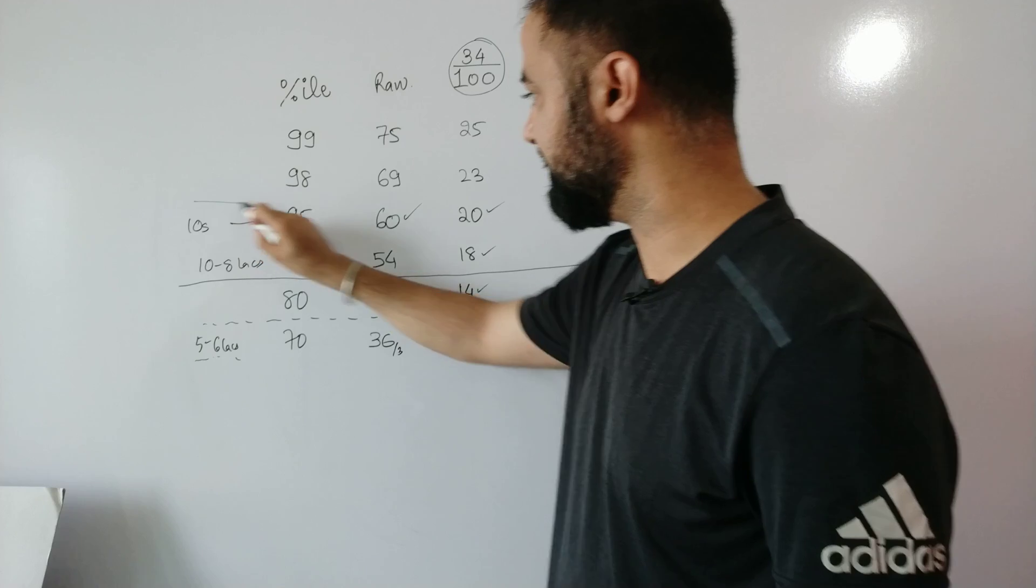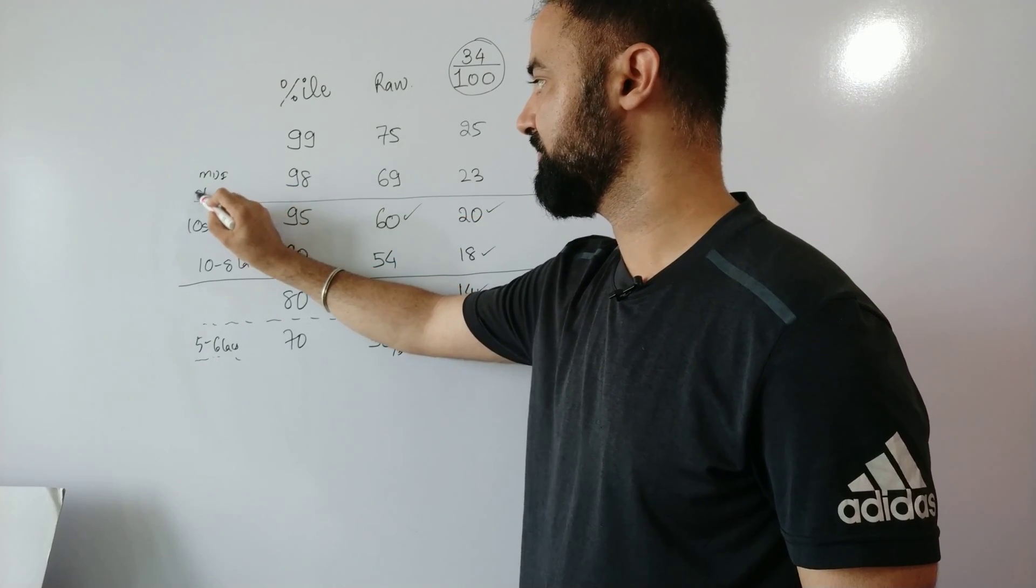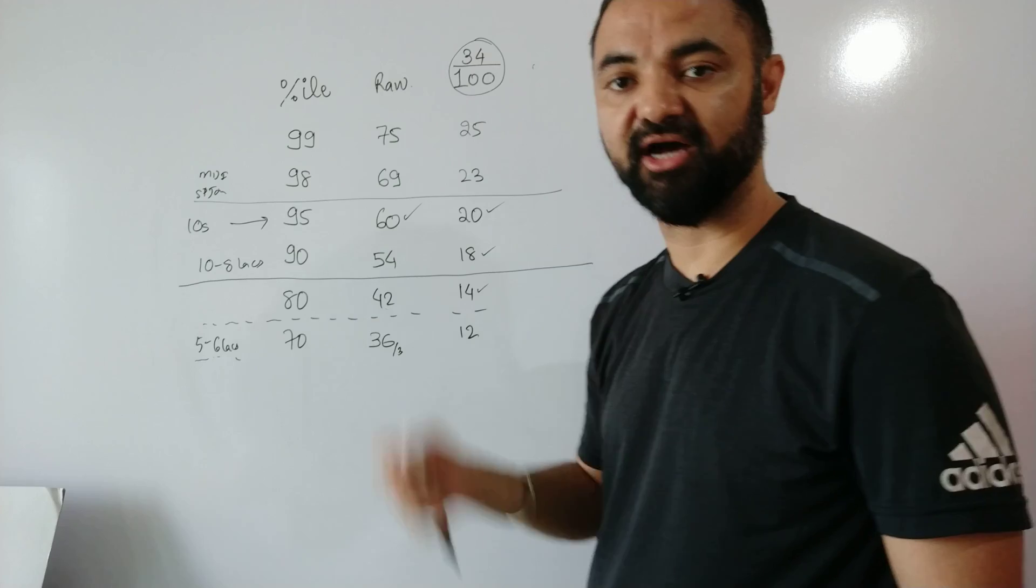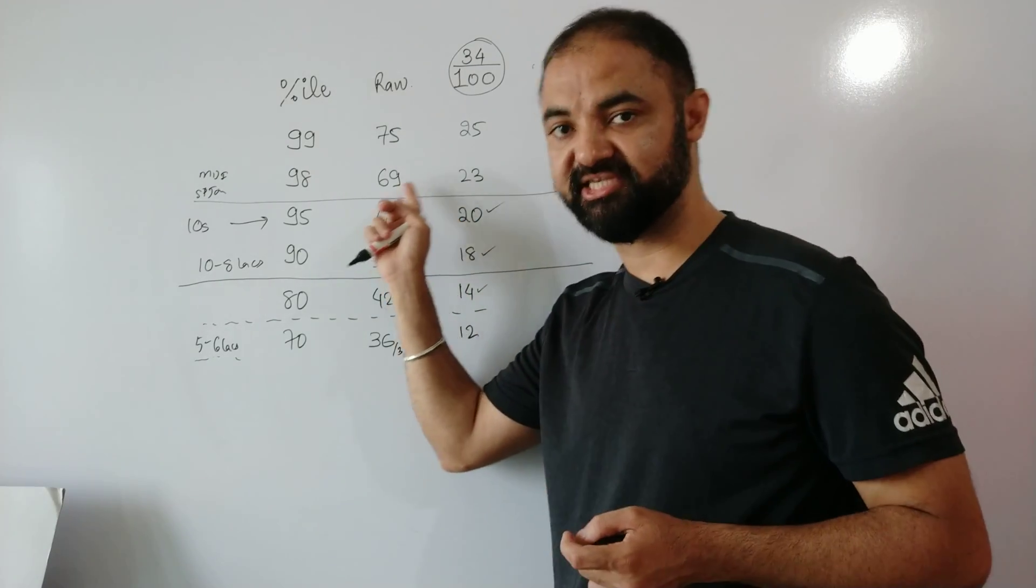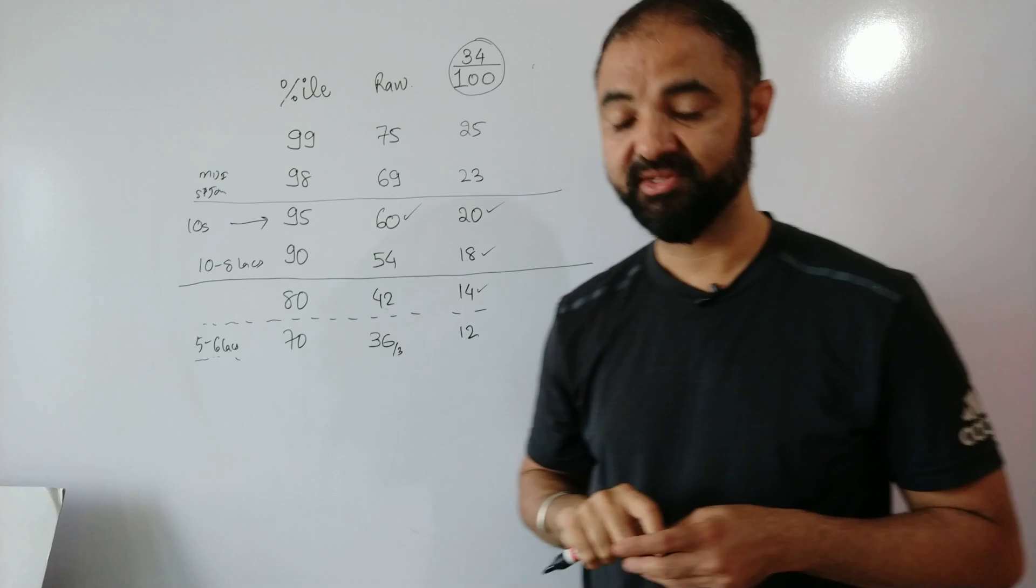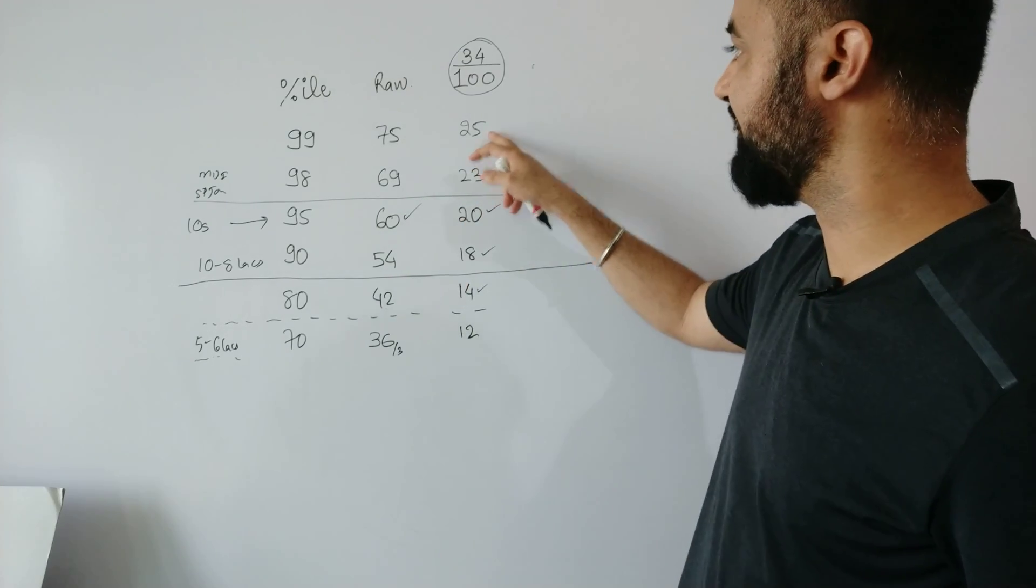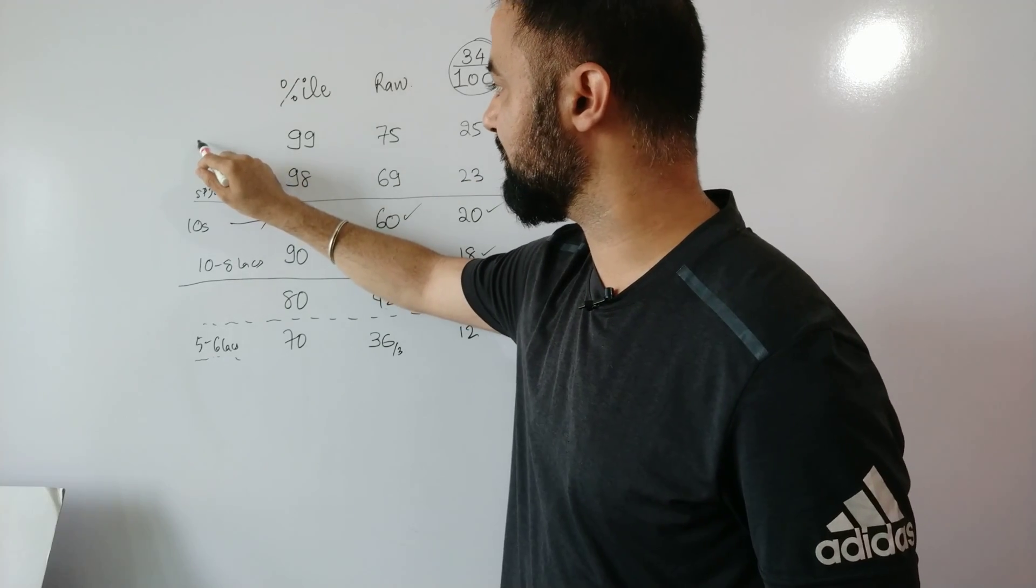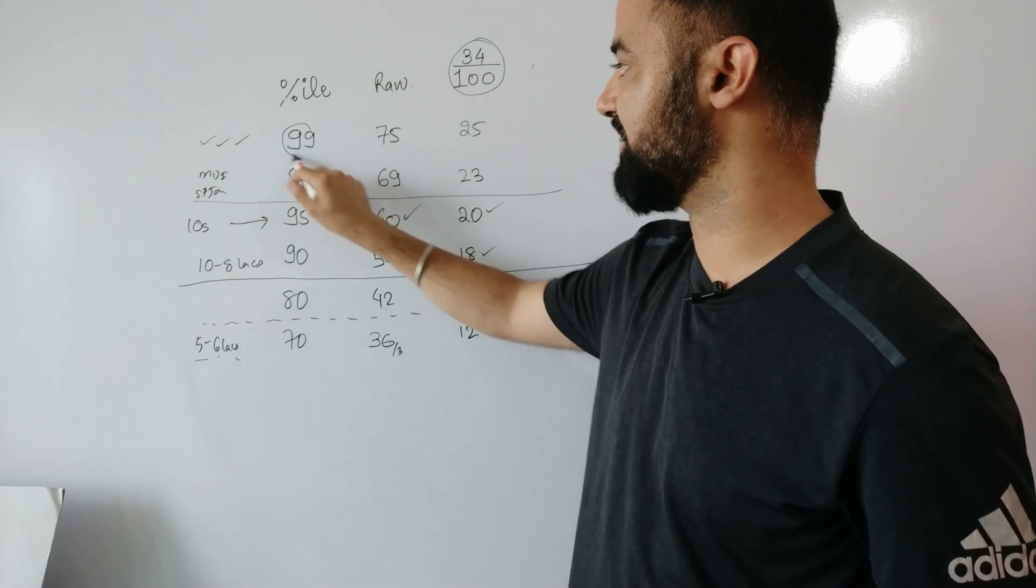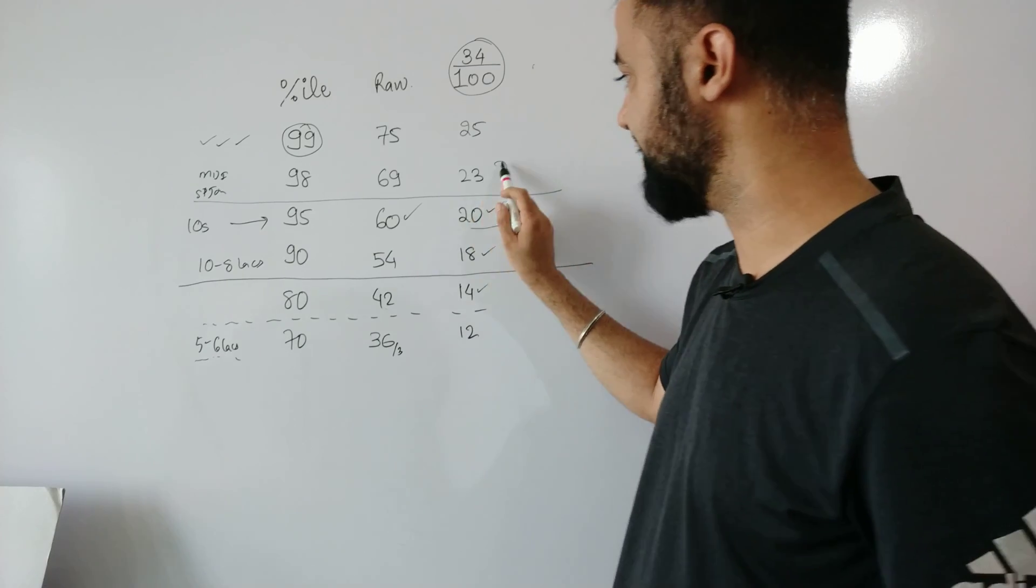98 percentile is where you will get MDI, SPJIMR all the calls and you can expect most of the IIM calls as well at 98 percentile, which is raw score of 69, 23 questions correct. And if you do 25 right, which is approximately 70 percent marks, you are getting IIM A, all the IIM calls at 99 percentile. So non-engineer can get all IIM calls at that range.